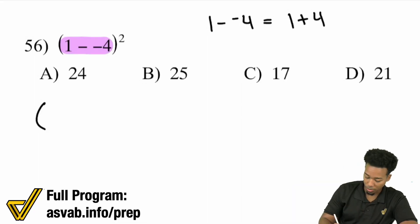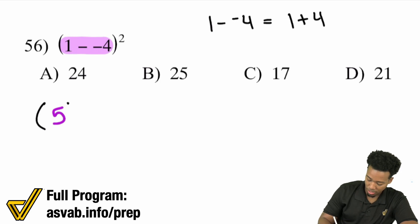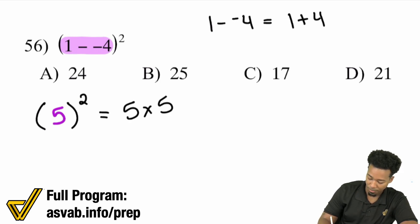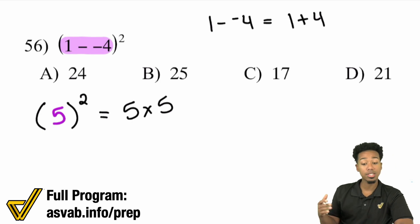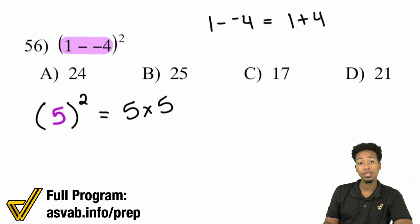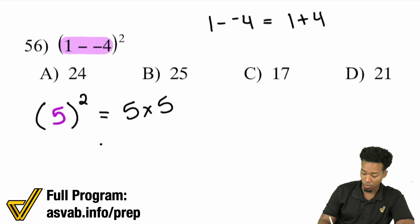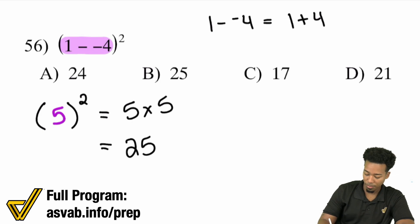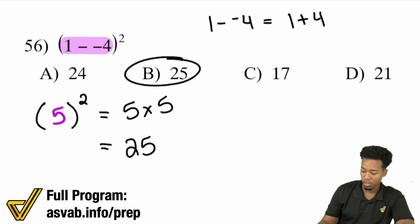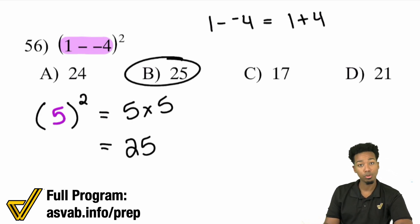That'll end up being 5. So we have 5 all squared. The number 5 squared means 5 times 5 — that exponent tells you how many times you're multiplying that base. And so 5 times 5 is 25. Booyah!